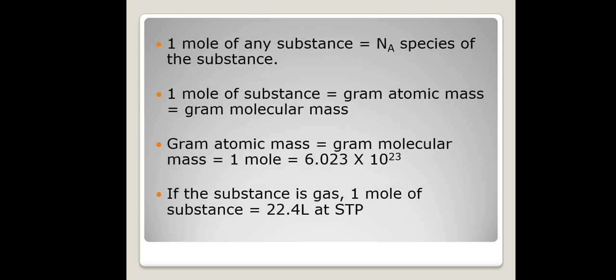One mole of any substance is always equal to Nₐ species, where Nₐ is Avogadro's number. So if you take one mole of any substance, it will always contain Avogadro's number of that particular species. One mole of substance is always equal to gram atomic mass or gram molecular mass, meaning the number of particles present in gram atomic mass or gram molecular mass is equal to Avogadro's number, 6.023 × 10²³.